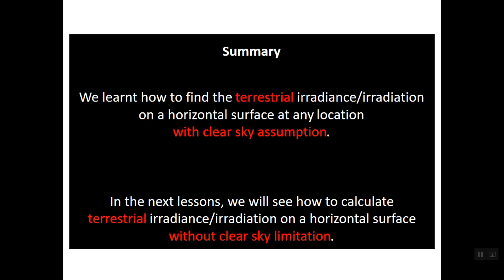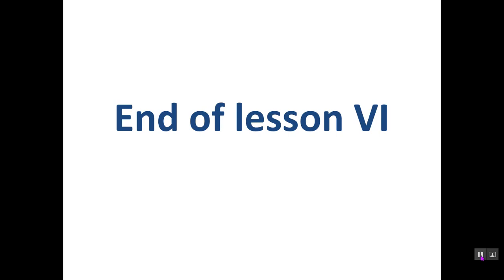In summary, today we learned how to find the terrestrial irradiance and irradiation on a horizontal surface at any location using the clear sky assumption. In the next lessons we will see how to calculate terrestrial irradiance and irradiation on a horizontal surface without the clear sky limitation. This is the end of lesson six — see you in the next lesson. Thank you and take care.